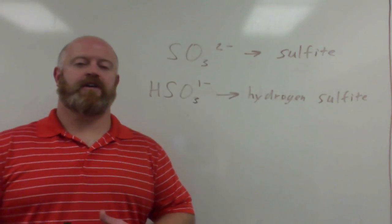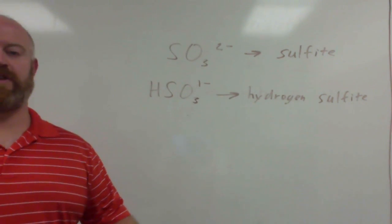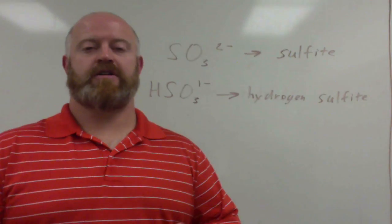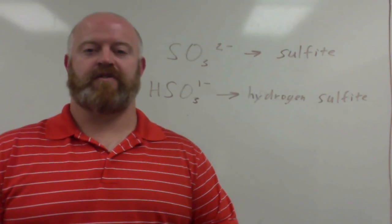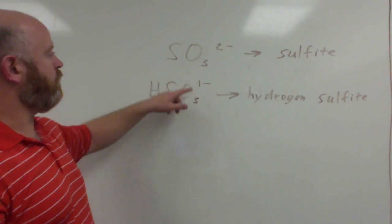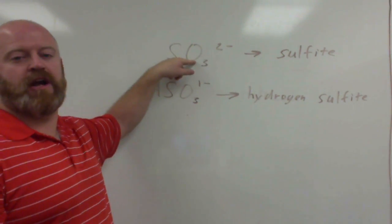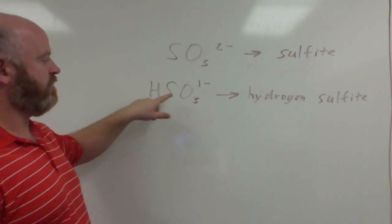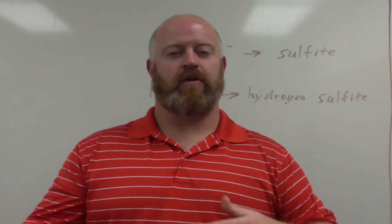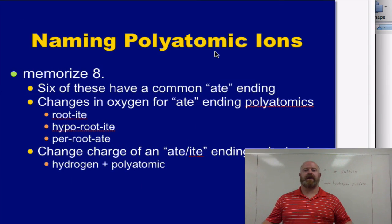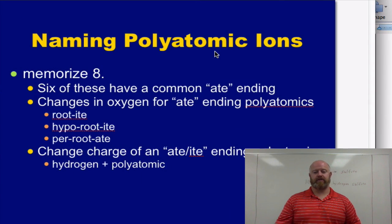So if you notice, the key here is starting with knowing those six polyatomic ions. Sulfate, nitrate, chlorate, carbonate, phosphate, sulfate. And then from that, we can change the number of oxygens to get to our ites, and we can add hydrogen to reduce our charge. So it's kind of a big piece of the puzzle, but once you get that all organized, you'll see that really expands the different type of chemicals out there that we can use.